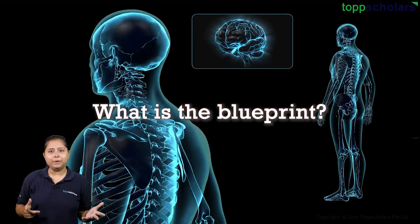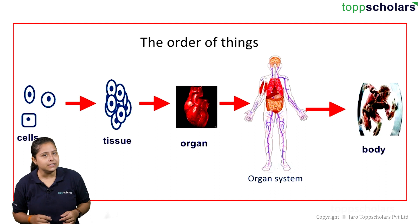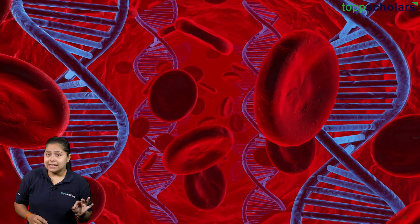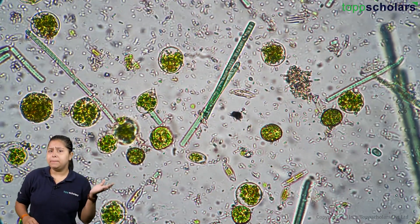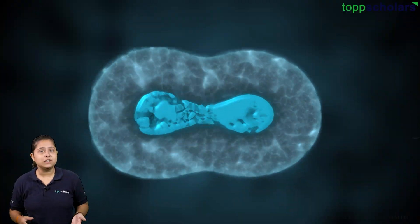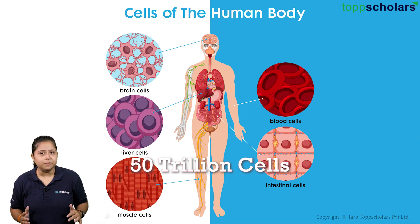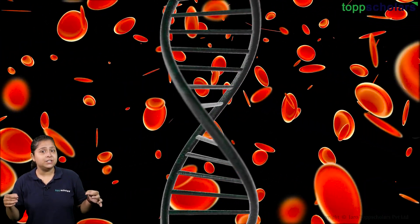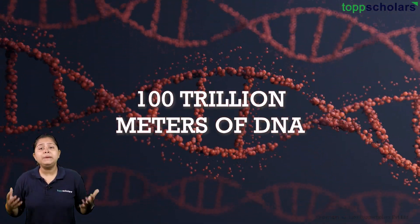What is the blueprint then? It contains all the information for the working of your cells — and cells are the building blocks of an organism. Whether it's a simple unicellular organism or huge and complex multicellular organisms, all have the building blocks of cells. Just imagine: 50 trillion cells in our body, each having its own DNA of two meters if stretched end to end.